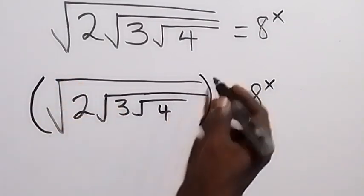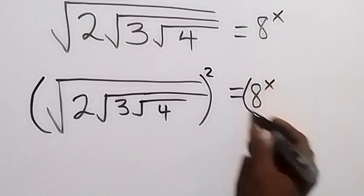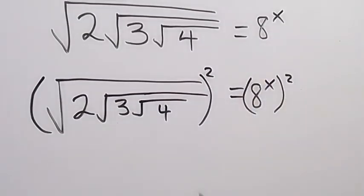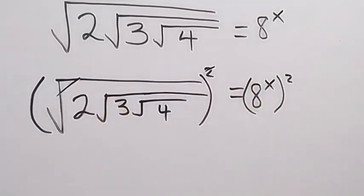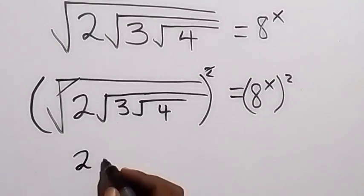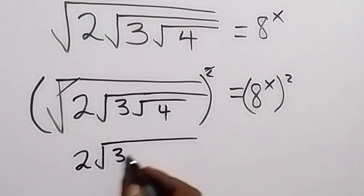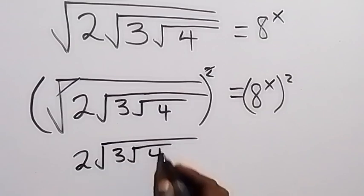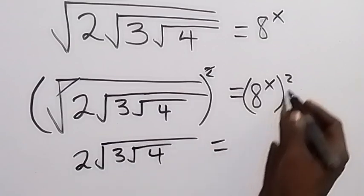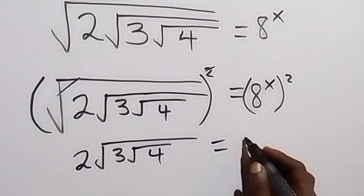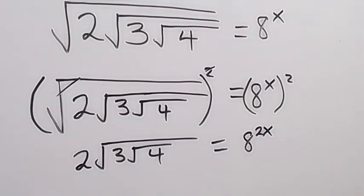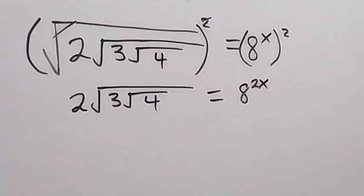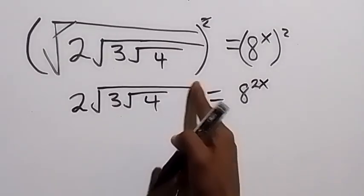So we square this side and also we square this side. The square cancels the square root, and what we have left is 2 root 3, then root 4, which equals 8 raised to power 2x.